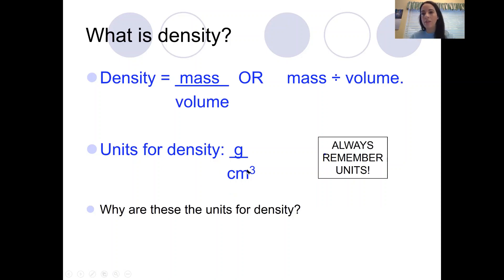Volume is a measure of length times width times height for a regular object. That's what gives us the cube. You don't have to do anything with the number if you have the units for volume. You just take your mass unit and divide it by your volume units.